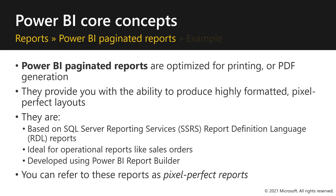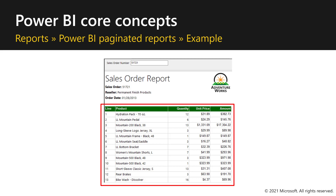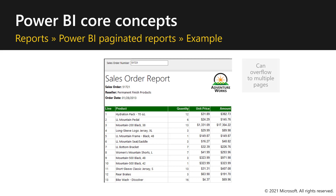This sales order report is designed to list each line of a sales order. There could be hundreds of order lines, so a paginated report can overflow those rows to multiple pages when necessary.